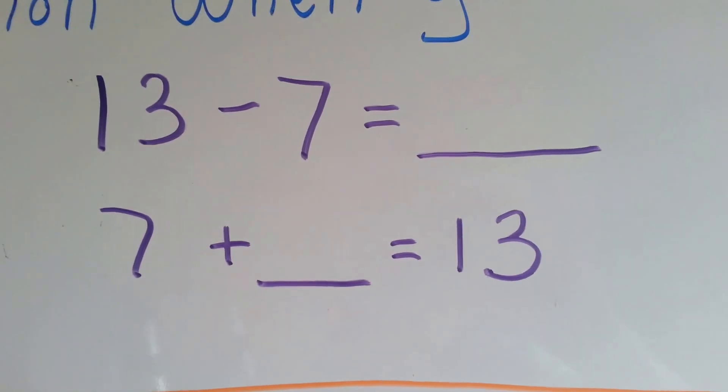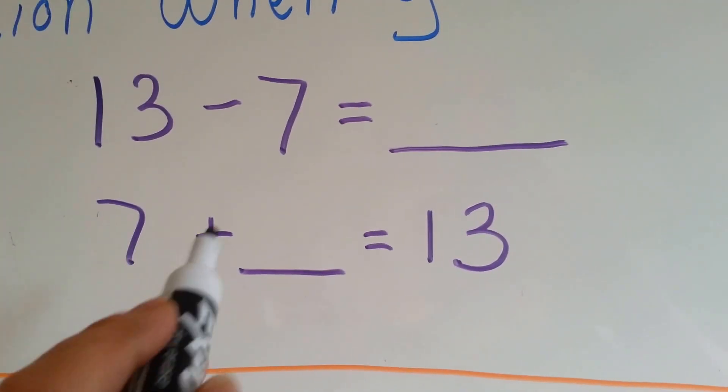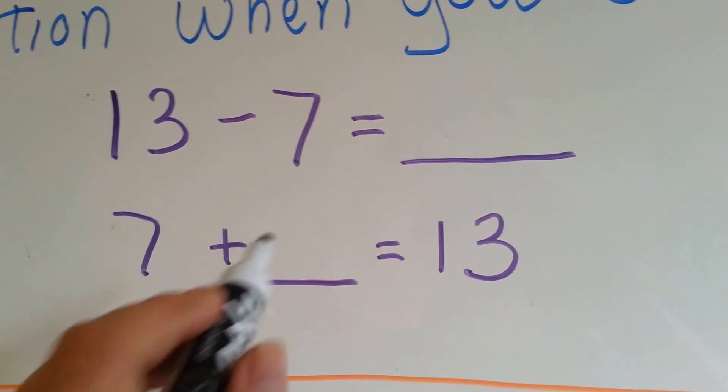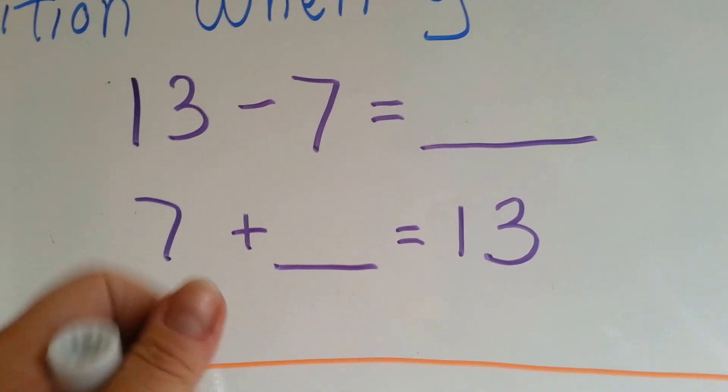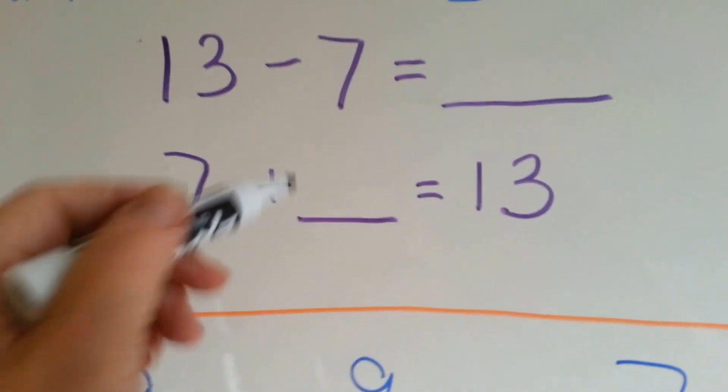Look at this one: 13 take away 7 is equal to something. Well, 7 plus what equals 13? 7 plus what? 8, 9, 10, 11, 12, 13. Six.